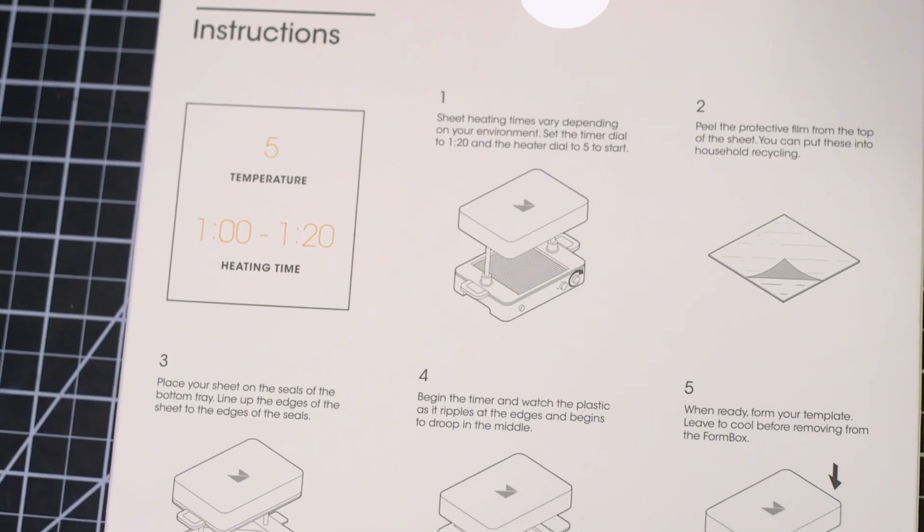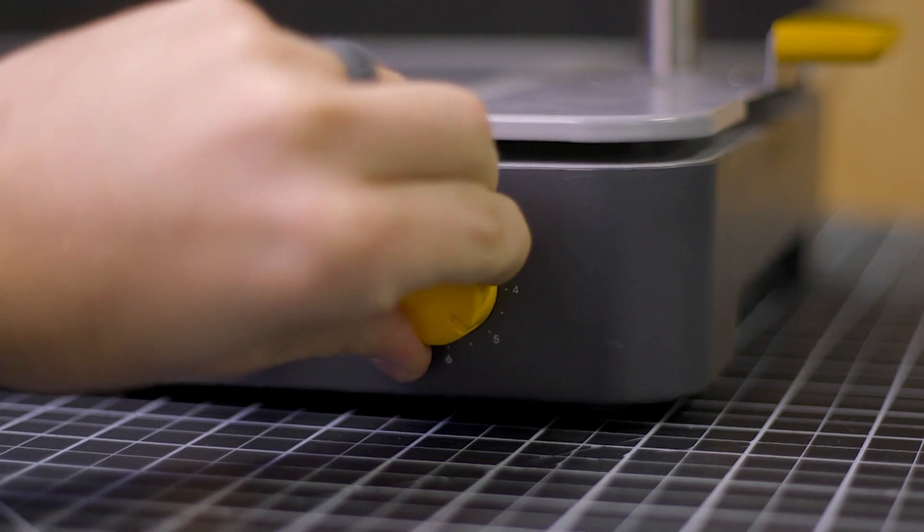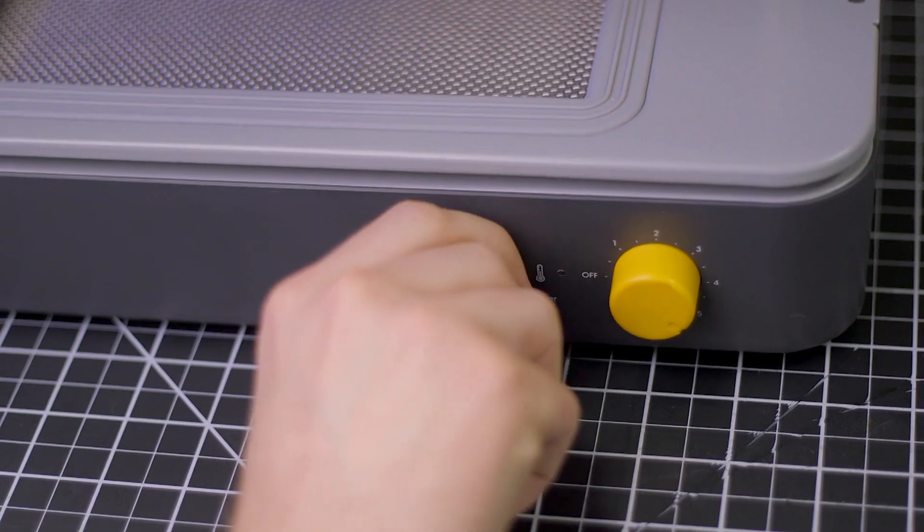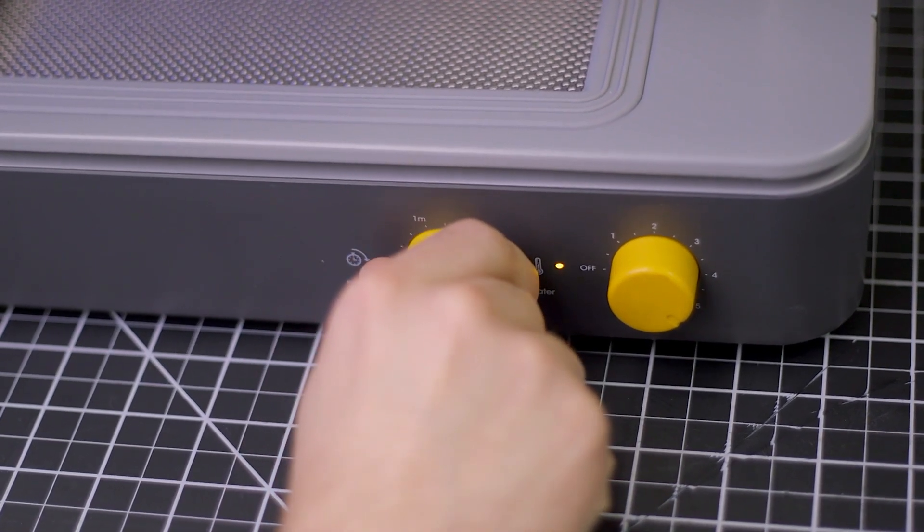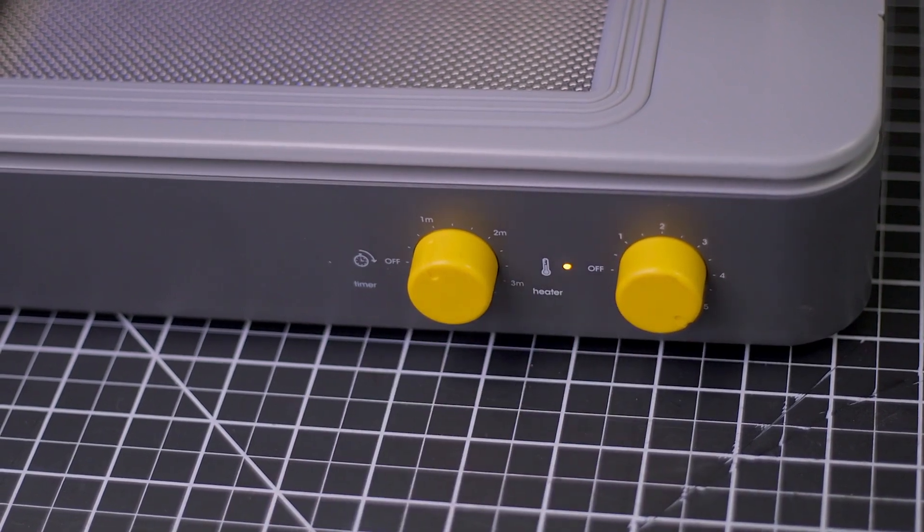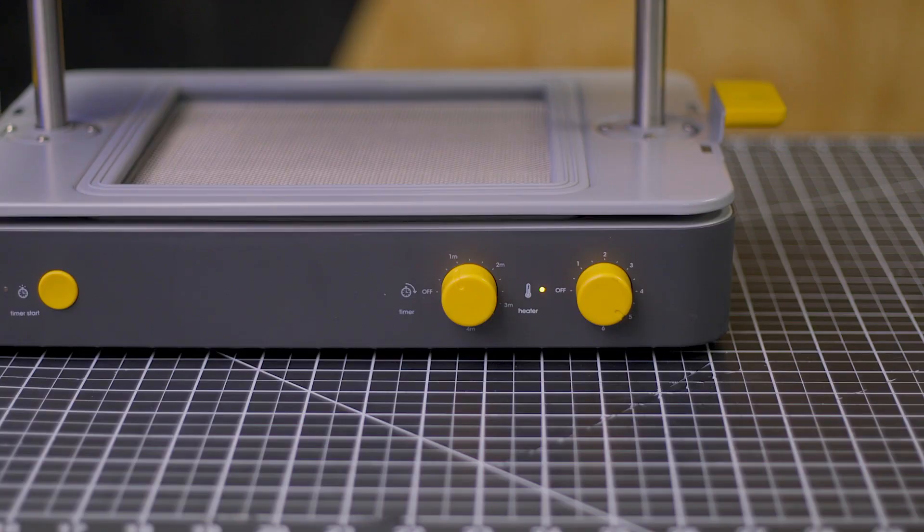Follow the temperature directions listed on the packaging for the clear sheet, 5 on the heating dial in this case. Set the timer to the recommended time listed on the packaging, in this case, 1 minute. Wait until the red light indicating the heater is not up to temperature has turned green.